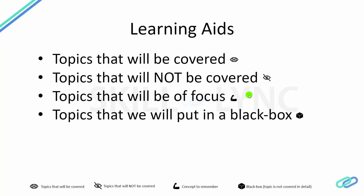Certain points have to be remembered, so you will basically see a particular symbol against concepts that you definitely have to remember. Given the complexity of the subject, certain concepts cannot be discussed in detail, so here we will basically use a black box approach — we will look at things that we care about and will not go into excessive detail.